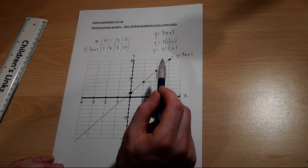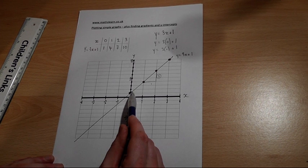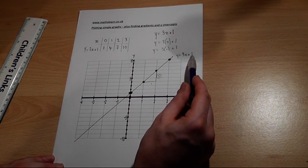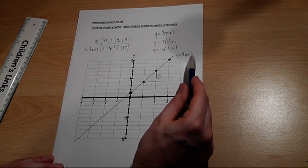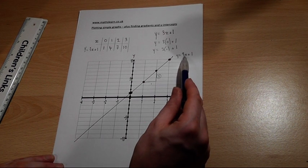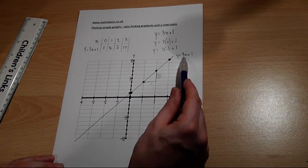So again, where the line cuts the y-axis is given by the y-intercept. For every 1 across we go, we go up 3. And this is given by the number before the x.